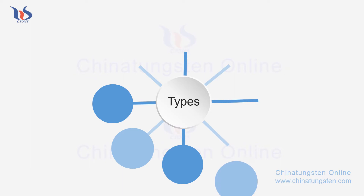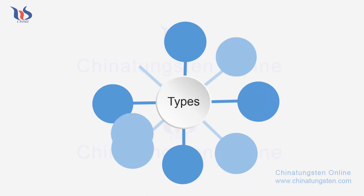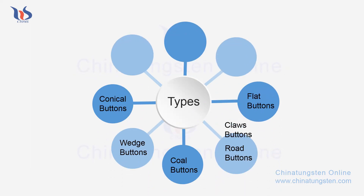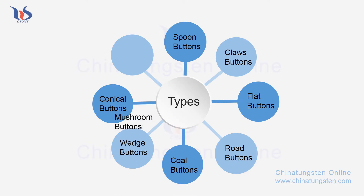Types of tungsten carbide buttons include conical buttons, wedge buttons, coal buttons, road buttons, flat buttons, claws buttons, spoon buttons and mushroom buttons.